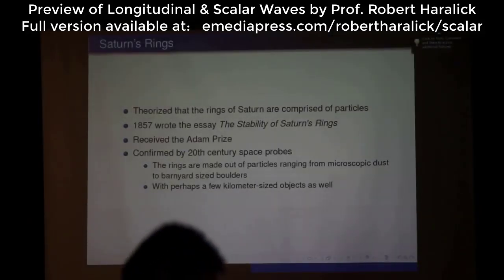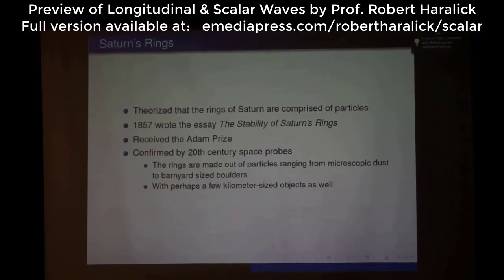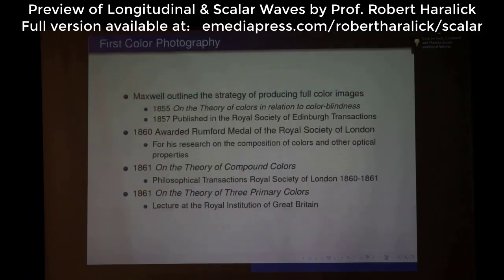All of this that he wrote in 1857 was confirmed by the 20th century space probes. The rings indeed are made out of particles ranging from microscopic dust to barnyard-sized boulders, with perhaps a few kilometer-sized objects as well. Everybody I think has seen this kind of a photo. Here's a surprise perhaps — Maxwell did the first color photography.